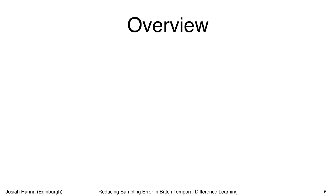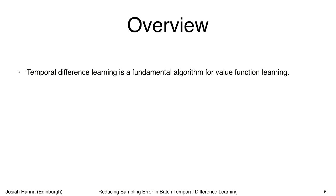Now I'll dive more into what is in our specific paper. Temporal difference learning is a fundamental algorithm for value function learning. If you take a reinforcement learning course, one of the first algorithms you learn is temporal difference learning. This algorithm was introduced in 1988 and it's a building block for many advances in reinforcement learning.